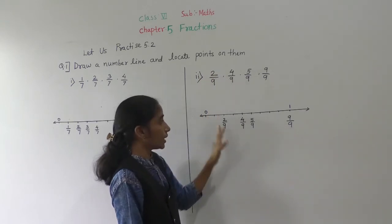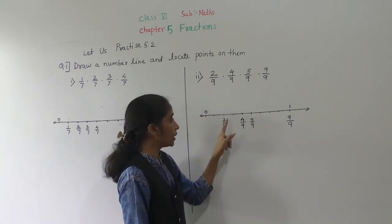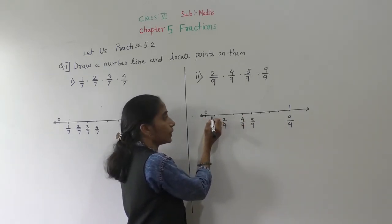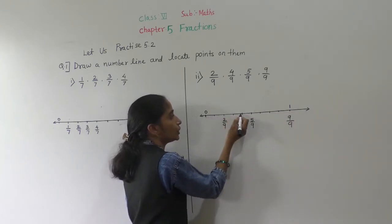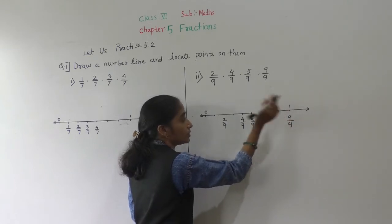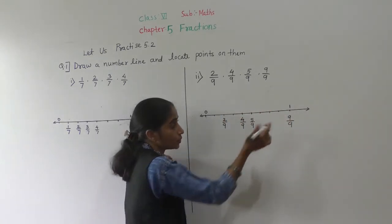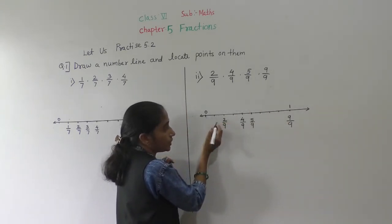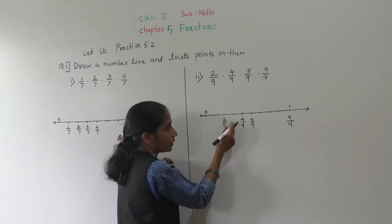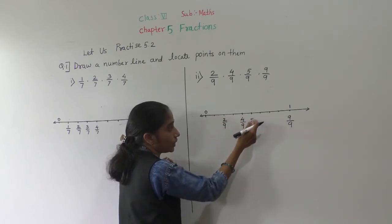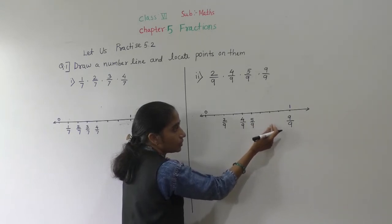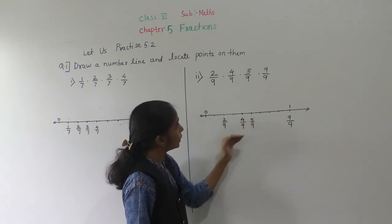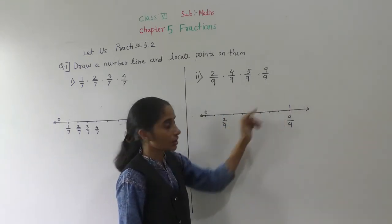Only the parts asked in the question we have to show on the number line. So represent 0, make 9 equal parts. This part is 1 upon 9, 2 upon 9, 3 upon 9, 4 upon 9, 5 upon 9, 6 upon 9, 7 upon 9, 8 upon 9, 9 upon 9. Show only the points given: 2 upon 9, 4 upon 9, 5 upon 9, and 9 upon 9.